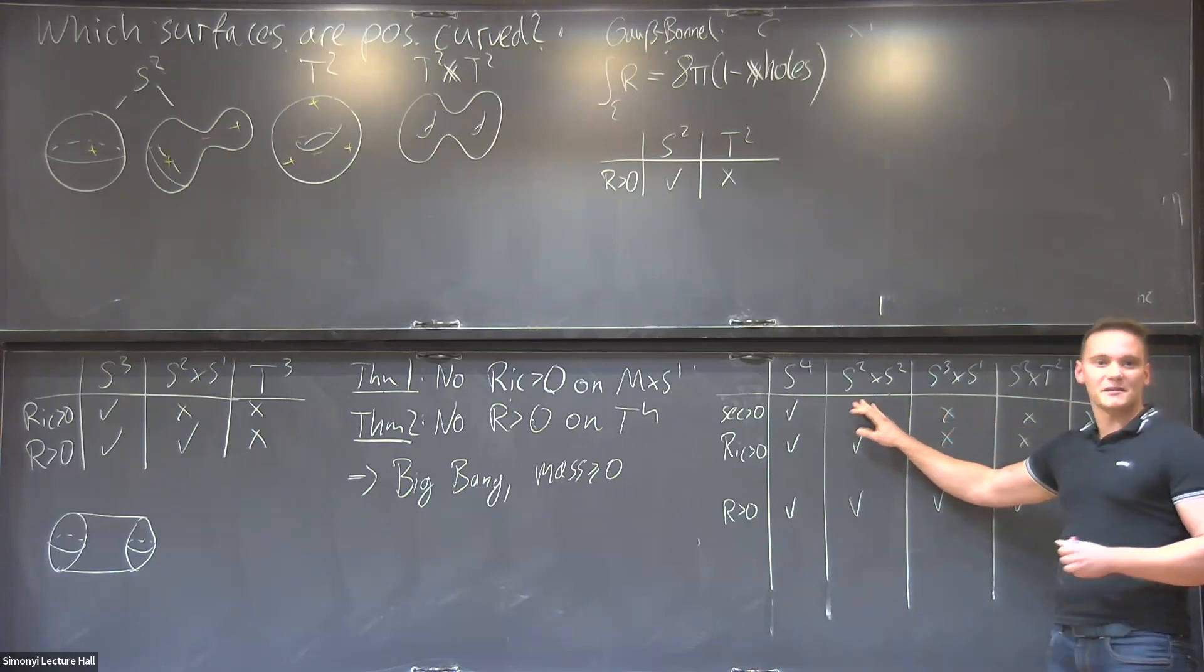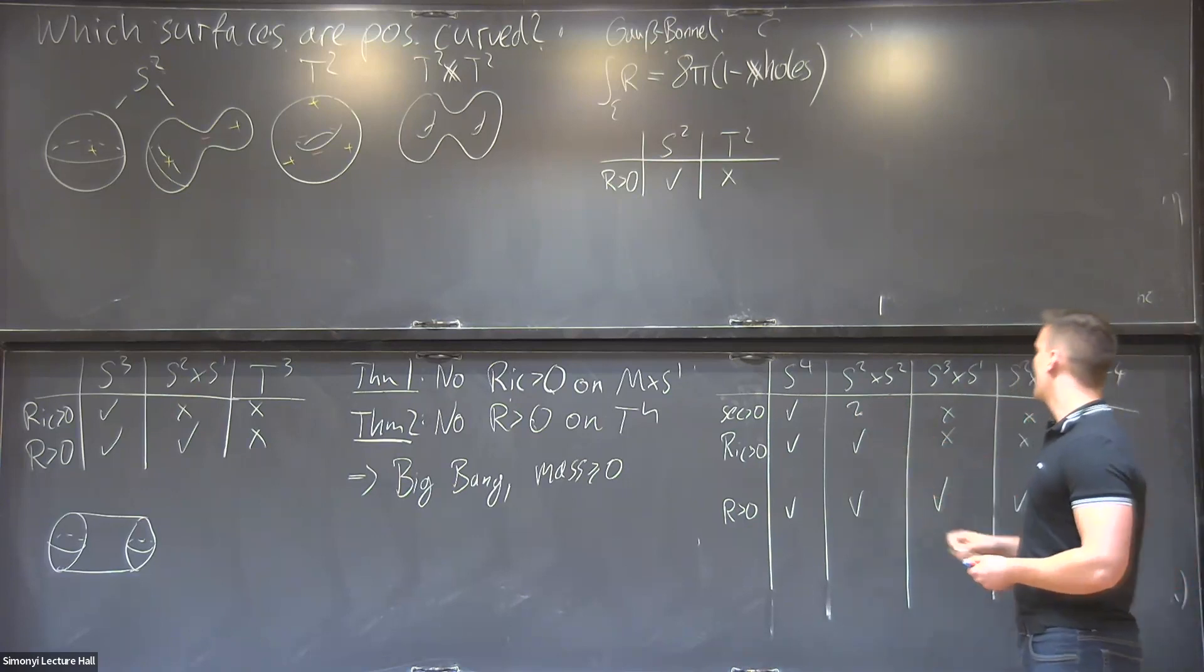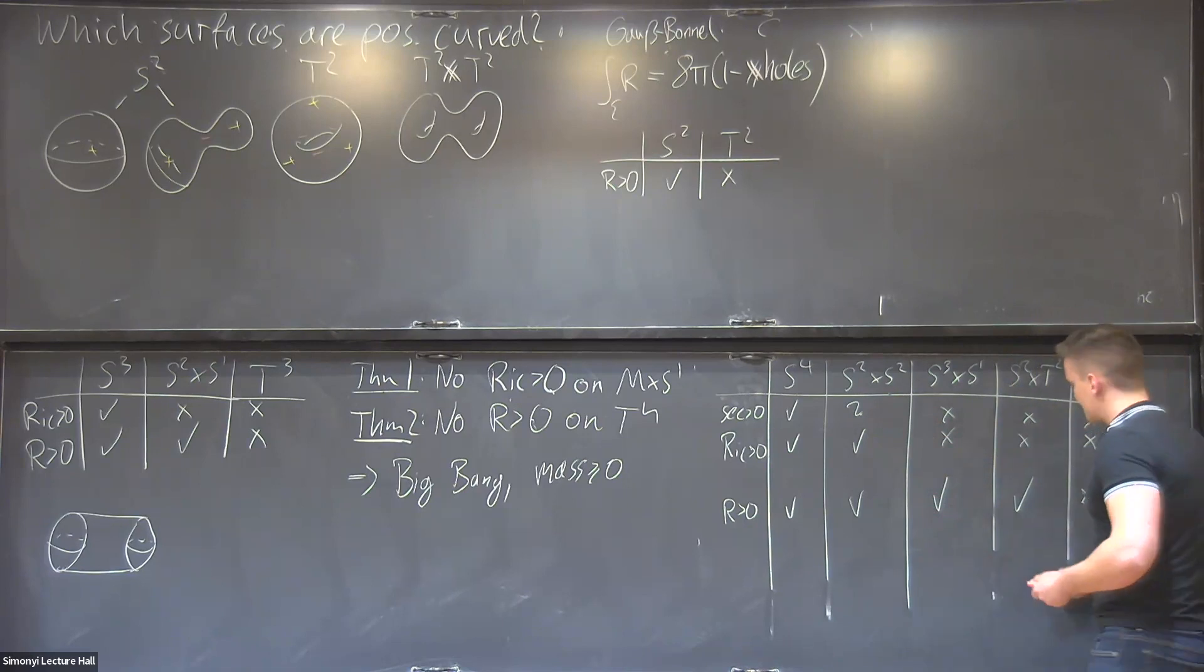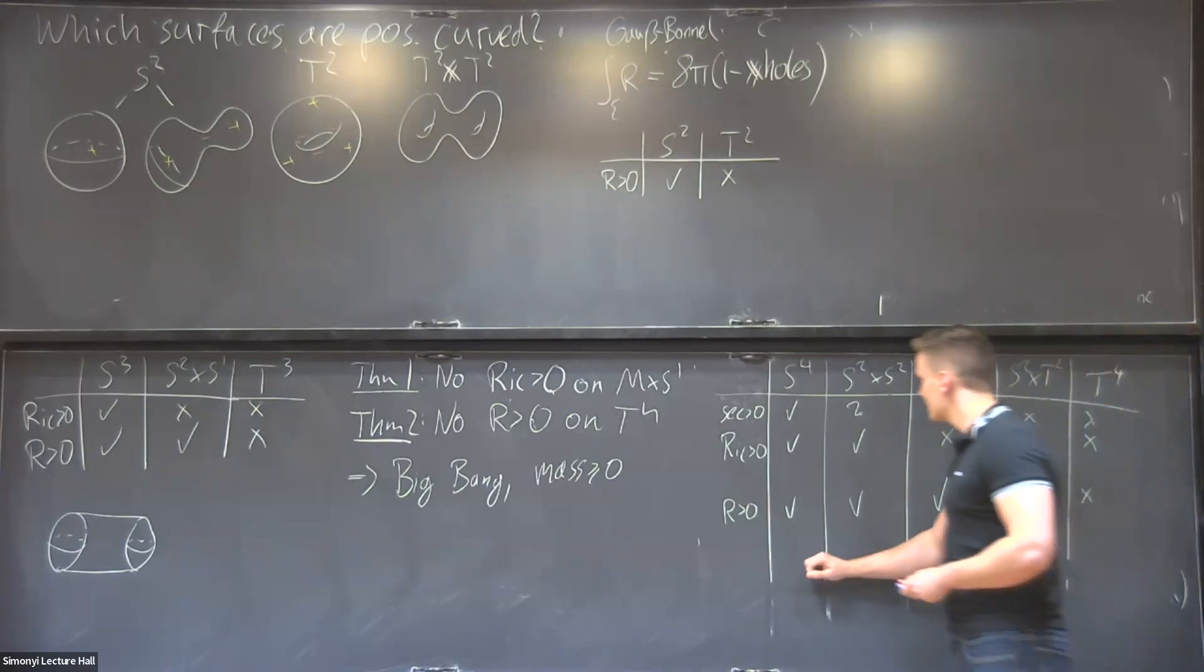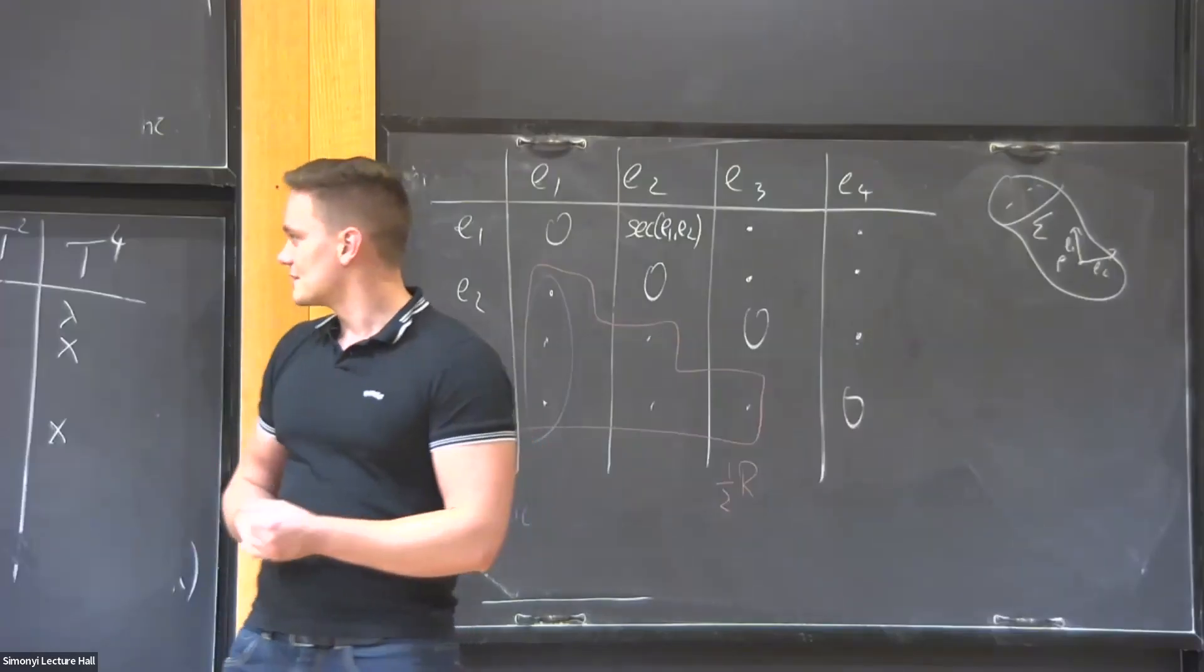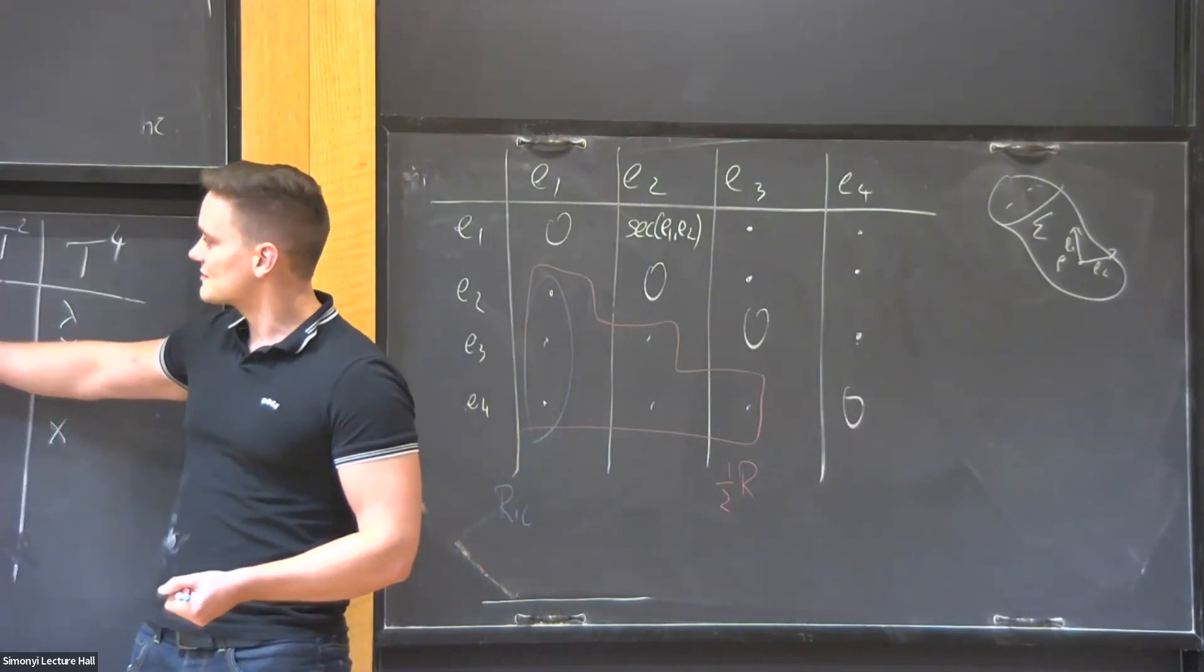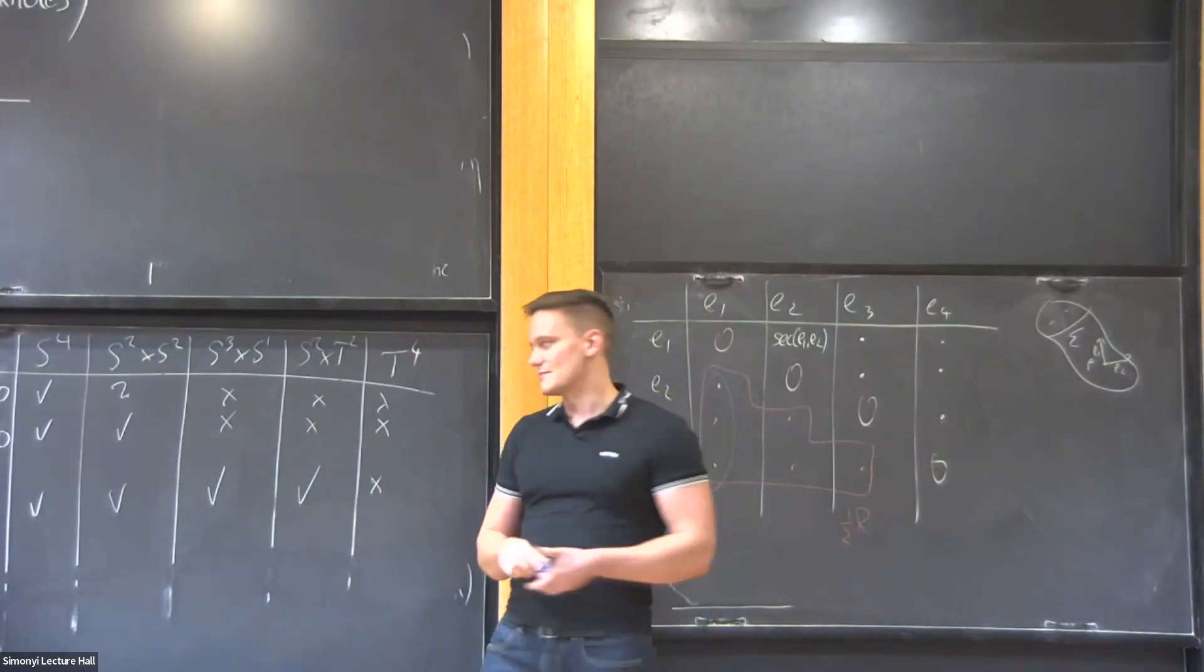But now we have a much less satisfying picture as before. Namely, we still have a gap and unfortunately I also cannot fill this gap. This is the so called Hopf conjecture, which is open for nearly one century. And then the other thing is if you look at S³ × S¹ and S² × T². These are two very different topological spaces. But you see they look exactly the same for sectional and positive Ricci. But they don't have them, but they do have positive scalar curvature. And we would like to distinguish them by the curvature.